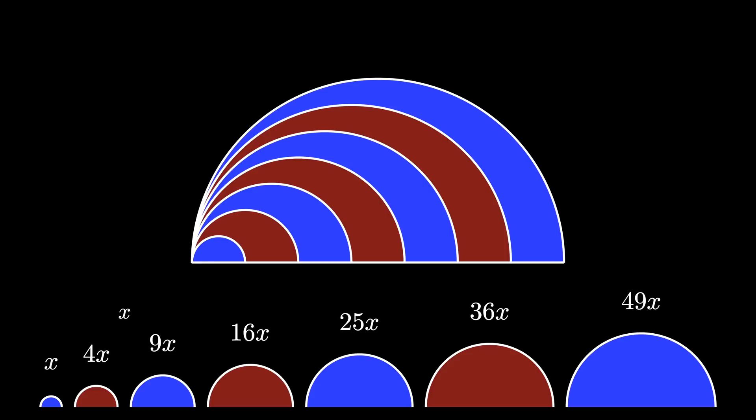We can use these values to determine the areas in the circle. The first region has an area of x, then 3x, then 5x, 7x, and so on. Each time, we are taking the difference of successive squares to get the next odd number.